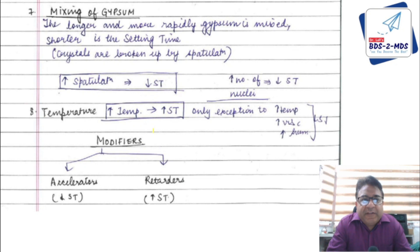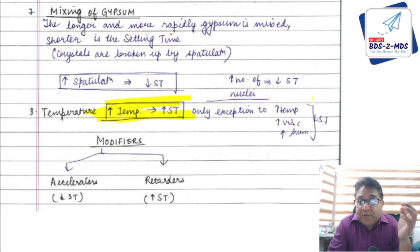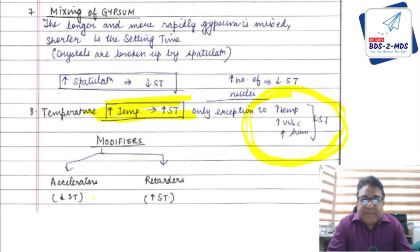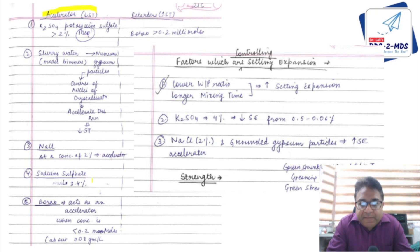Mixing of gypsum: longer and more rapid mixing (spatulation) decreases setting time. Increase in temperature decreases setting time — gypsum is the only material showing this exception. Accelerators decrease setting time and include K₂SO₄, slurry water, sodium chloride, and sodium sulfate. Borax acts as an accelerator at concentrations less than 0.2 millimoles but increases setting time above 0.2 millimoles.